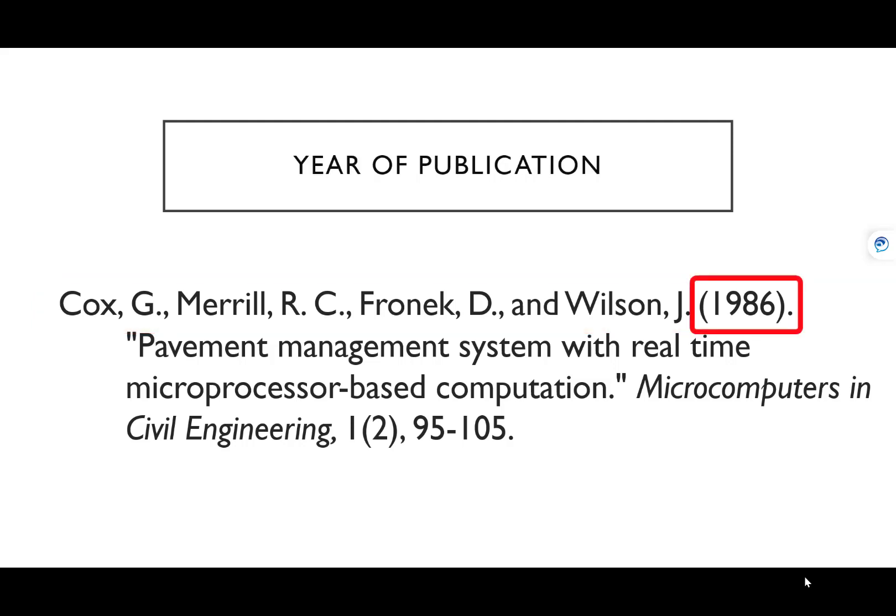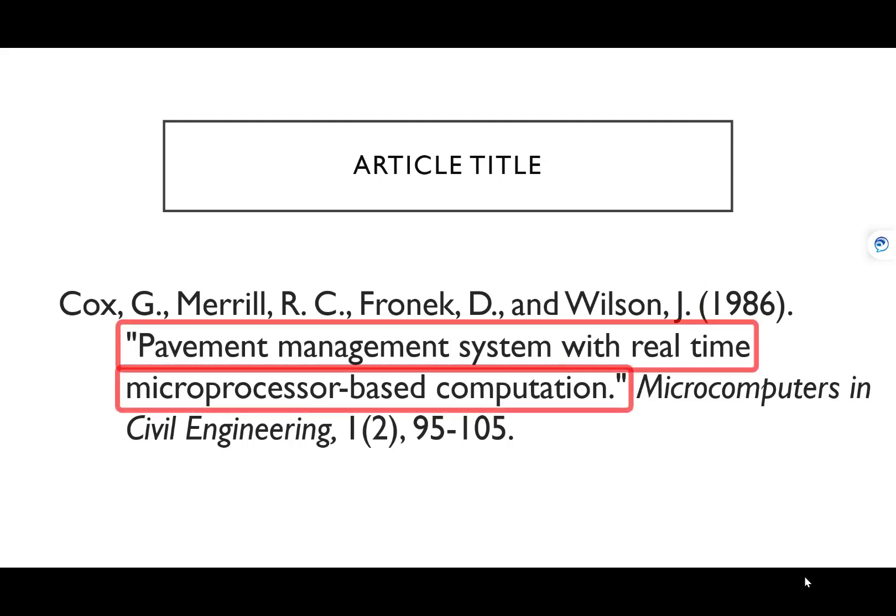The next part is the year of publication. The year is written within parentheses followed by a period. After that is the title of the article. The title of the article capitalizes only the first word of the sentence and any proper nouns, with a period at the end of the sentence. The title of the article is also enclosed in quotes.